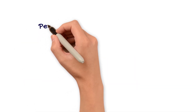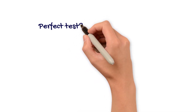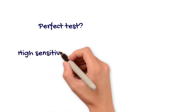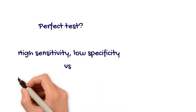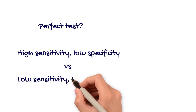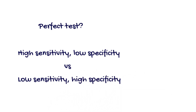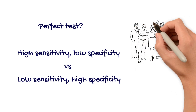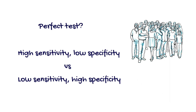A test cannot be perfectly sensitive and specific at the same time. A test with high sensitivity will typically have lower specificity and vice versa. It's up to us to choose a sensitive or specific test based on what we are looking to accomplish — either rule in or rule out a condition.